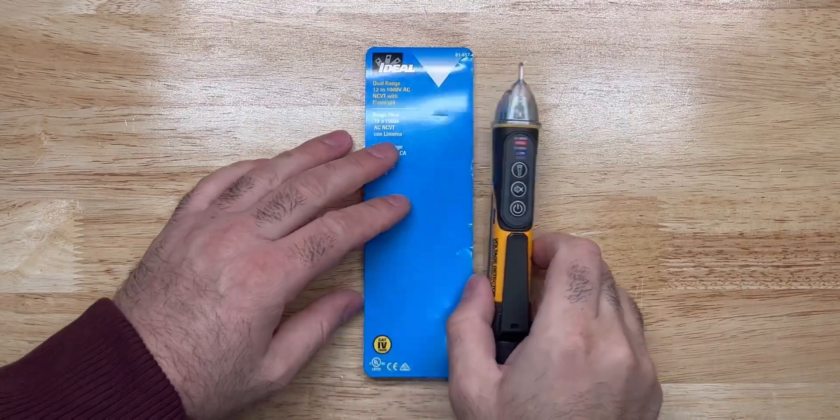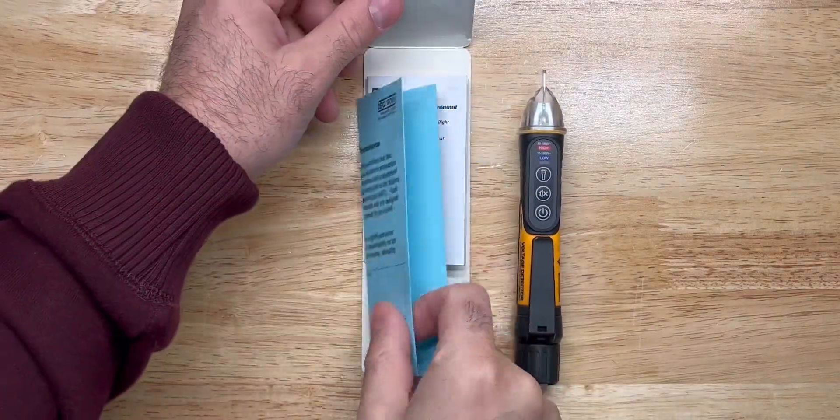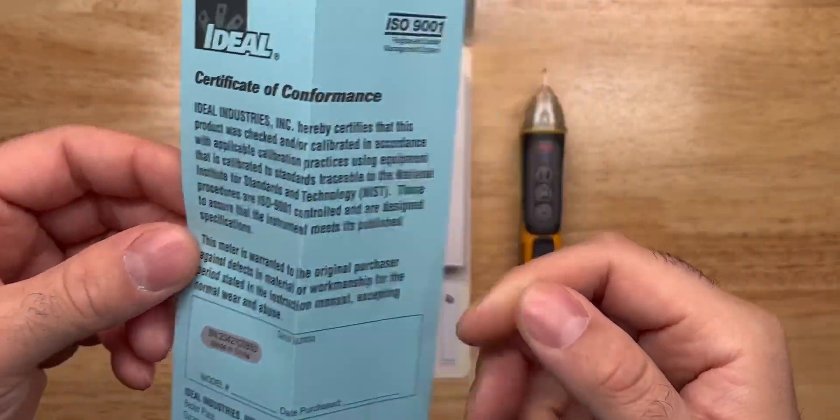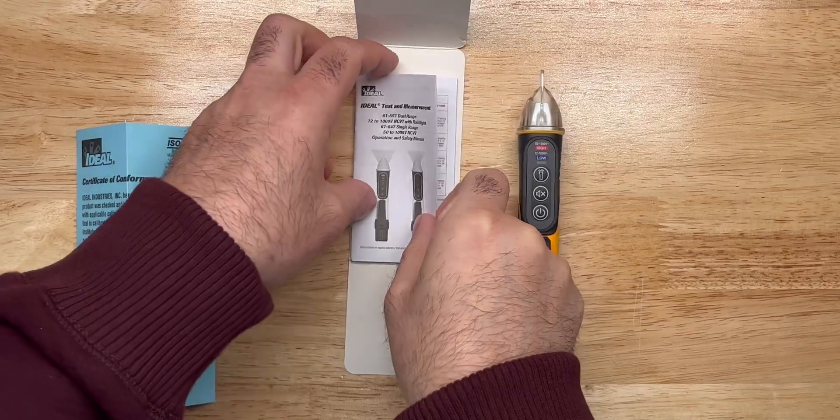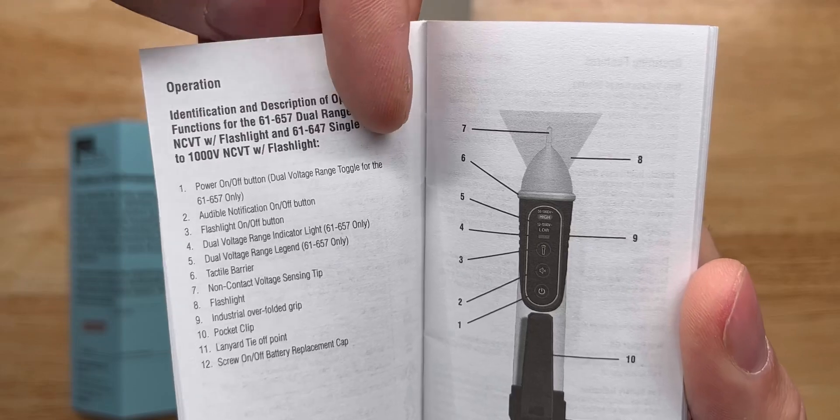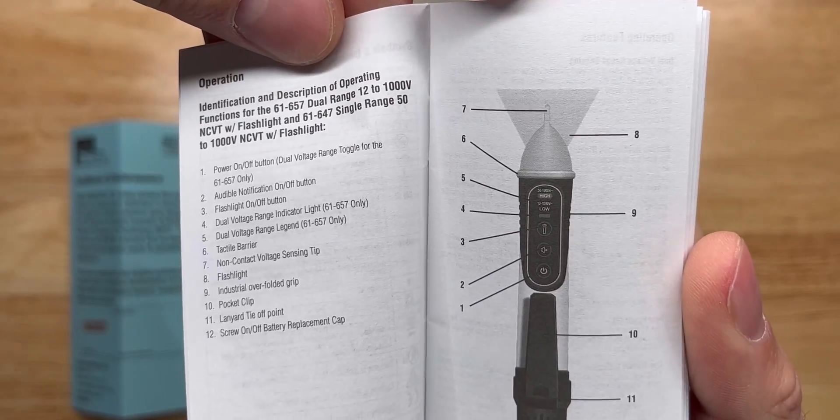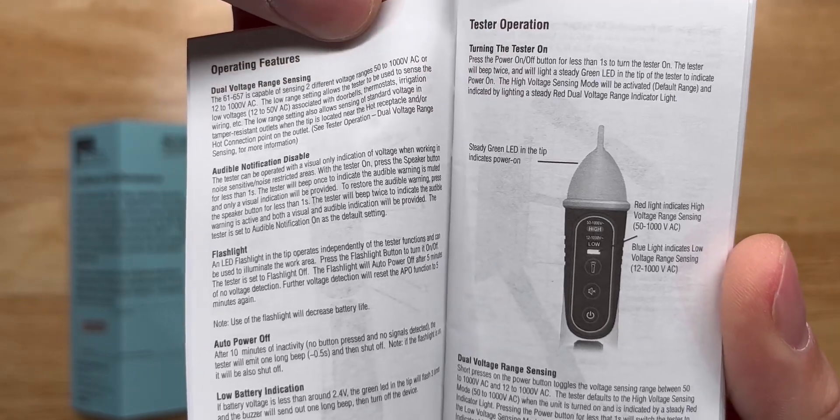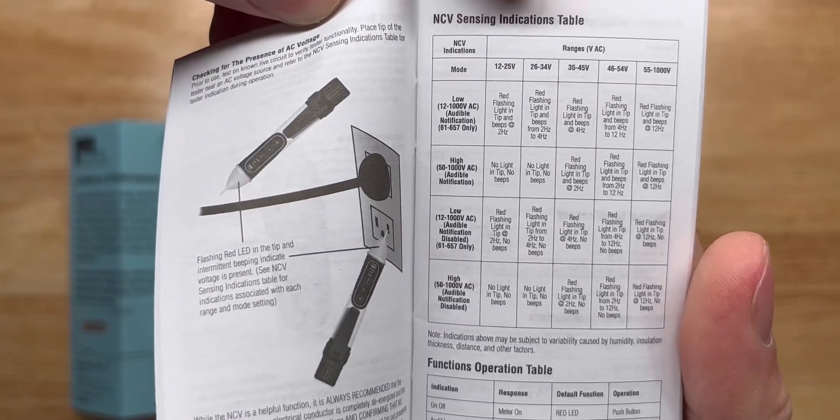Inside the packaging there is a certificate of conformance. There's also a handy booklet and I'll go over it really quickly. Operation, your basic operation and the pointers of each feature on the device, operating features and CV sensing indication table.